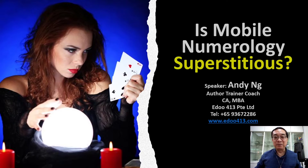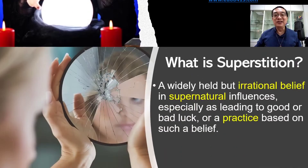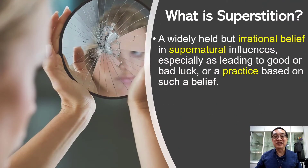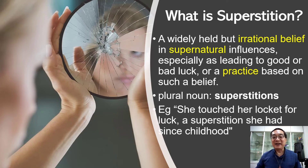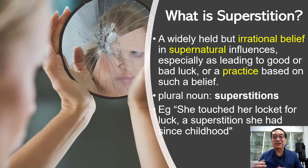What exactly is superstition? According to the dictionary, it is a widely held but irrational belief based on some supernatural influence. For example, if somebody touched your shoulder and you say it's bad luck and you will not strike 4D — most people would say this is superstitious.